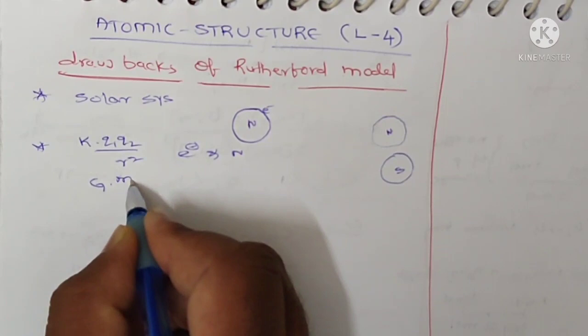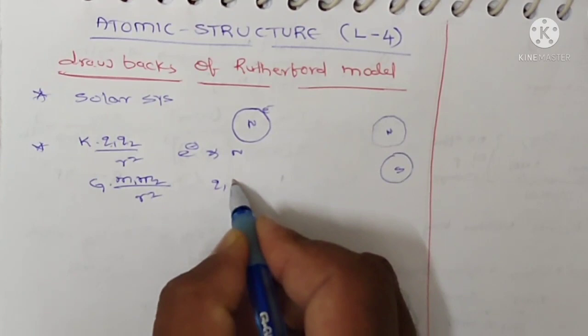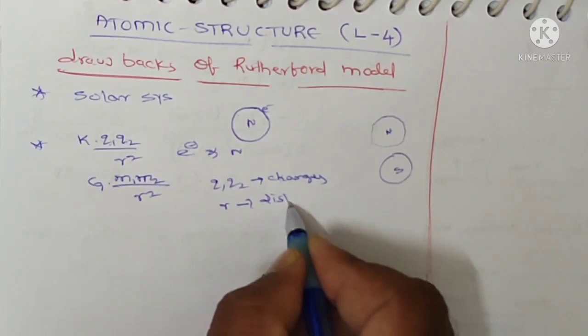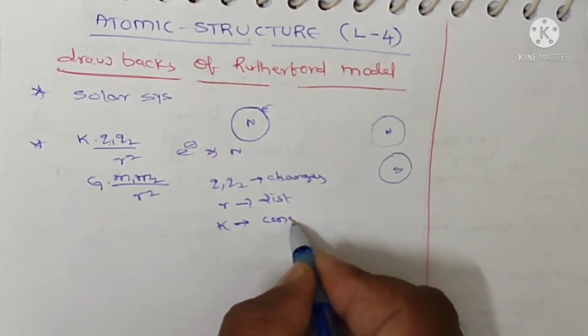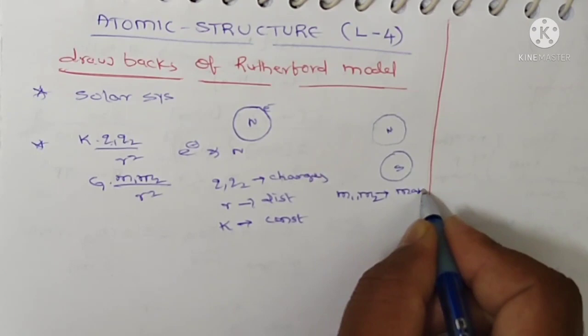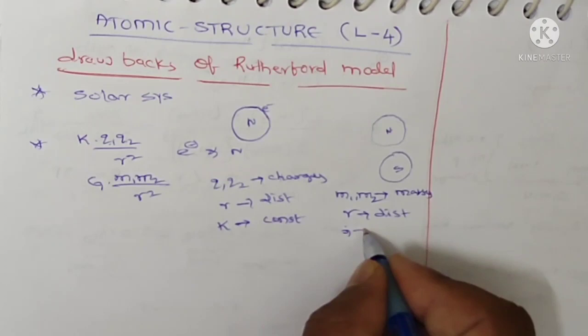The gravity force formula is G into M1M2 by R square. In the Coulombic force, Q1 and Q2 are the charges and R is the distance of separation of charges, and K is the proportionality constant. In the gravity force, M1 and M2 are the masses, R is the distance of separation of the masses, and G is the gravitational constant.